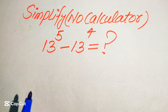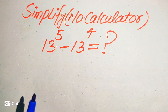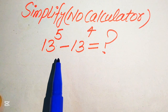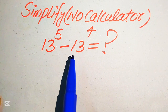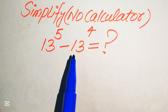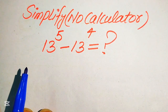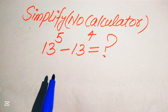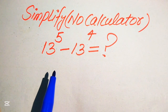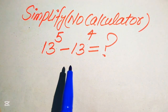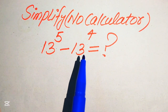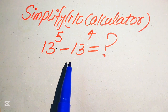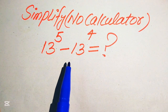Hello everyone. How to simplify this nice algebraic expression? So if we have 13 to the power of 5 minus 13 to the power of 4, we write this algebraic expression into the simplified form. Remember one thing: a calculator is not allowed in this problem, which means we will show all of the working on paper.